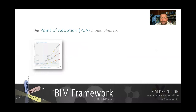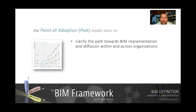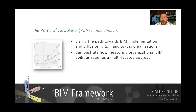When we are discussing the Point of Adoption Model, we are trying to do the following things. We are trying to clarify the path towards implementation and diffusion within a specific organization — looking at adoption of BIM within an organization or across organizations. We are trying to clarify the path moving from before adopting BIM, through adoption, to the diffusion of BIM. We are also trying to demonstrate how to measure this increase or change in organizational BIM ability, because BIM is not simply the adoption of a tool — it includes adoption of tools, processes, standards, and policies.